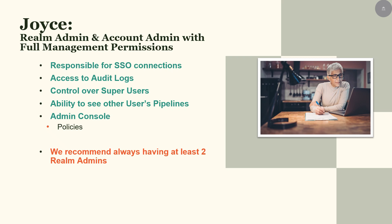Joyce is responsible for setting up and maintaining SSO on the account with the help of our technical support team. She also has access to audit logs, a very powerful tool to see changes and activities happening on the account. She also has the power to appoint super users who have access to every application on the account, and the ability to view other users' pipelines, help disable them, build them out, and make sure that they're working correctly.